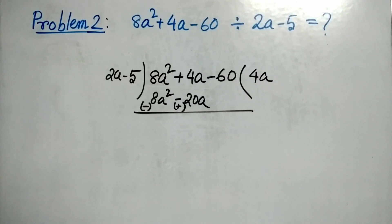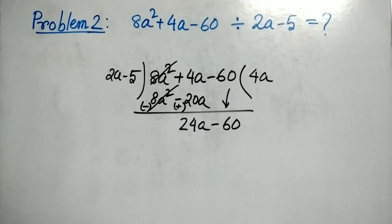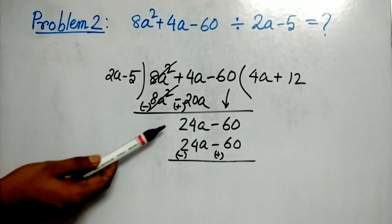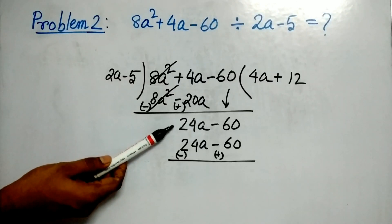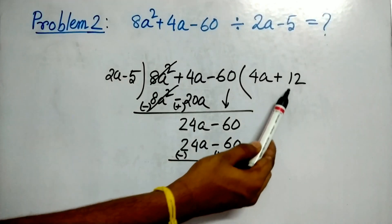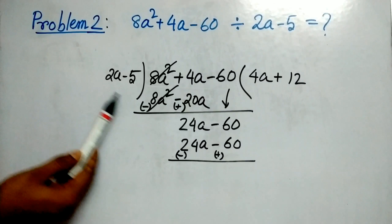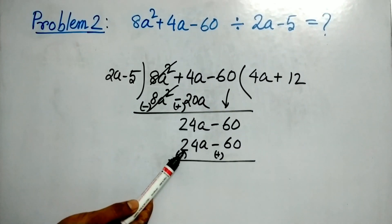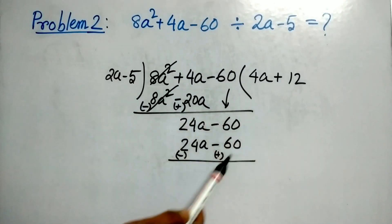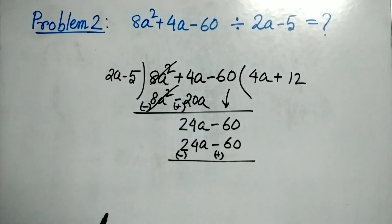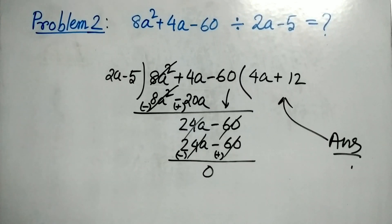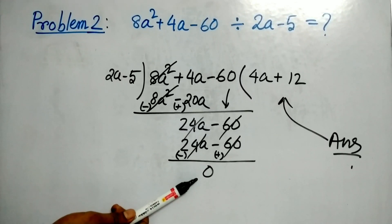After subtraction, 8a squared gets cancelled, and 20a plus 4a is 24a, and 60 has come down. 24a is the first term, so we multiply 12 with the divisor to get 24a, and minus 5 times 12 is minus 60. After subtraction we get 0 as remainder.